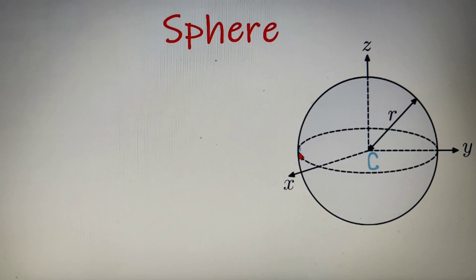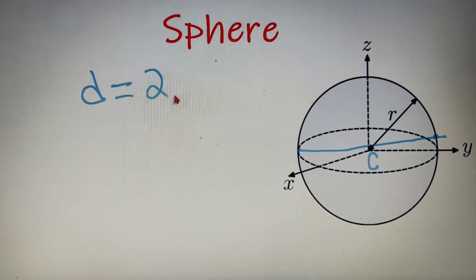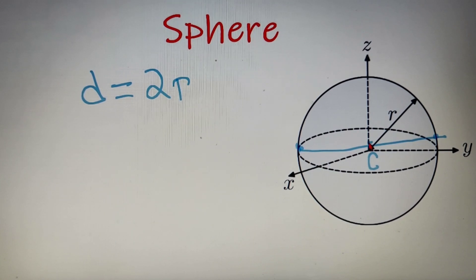The straight line that connects two different points on the boundary of the sphere and that passes through the center of the sphere is called the diameter of the sphere. Now diameter of a sphere is generally represented by the small letter d and it is equivalent to twice of r. Now this is because if the distance between this point and center is r and the distance between center and this point is also r, then r plus r is equal to 2r. That implies that the diameter of a sphere is equal to twice of r.